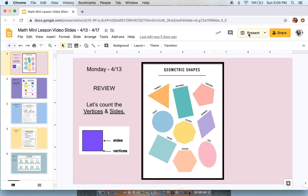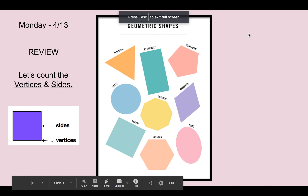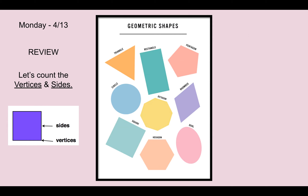We're having a quick mini lesson review on our geometry shapes. Let's quickly review what are sides versus vertices. When we look at a shape, we are looking at how many sides and how many vertices each shape has.